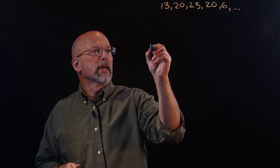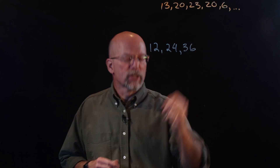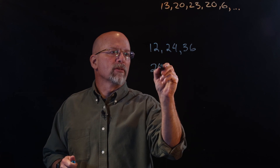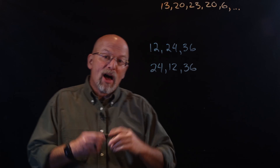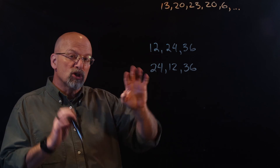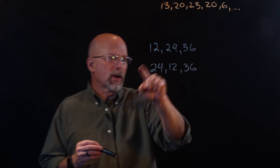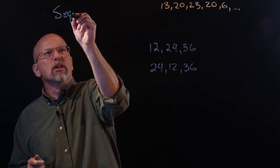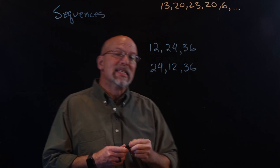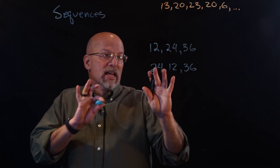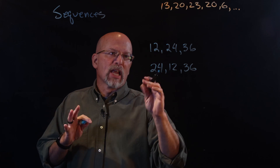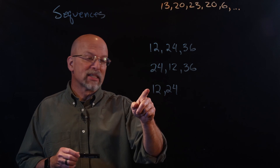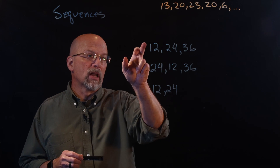So if we have a sequence like twelve, twenty-four, thirty-six, that is a finite sequence — three elements, always in order. If I swap two, we've got twenty-four, twelve, thirty-six. When we're talking about a set, those two would be equal with curly braces. But as far as sequences are concerned, they're not equal. Even a sequence of twelve, twenty-four is not the same — it won't open the lock.